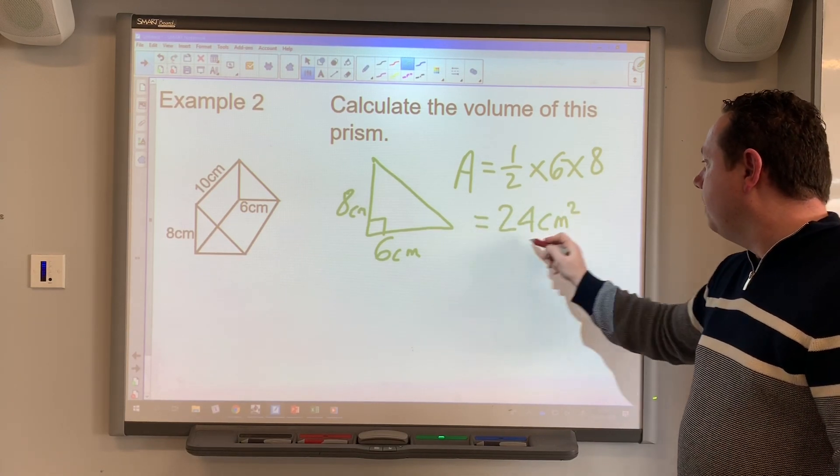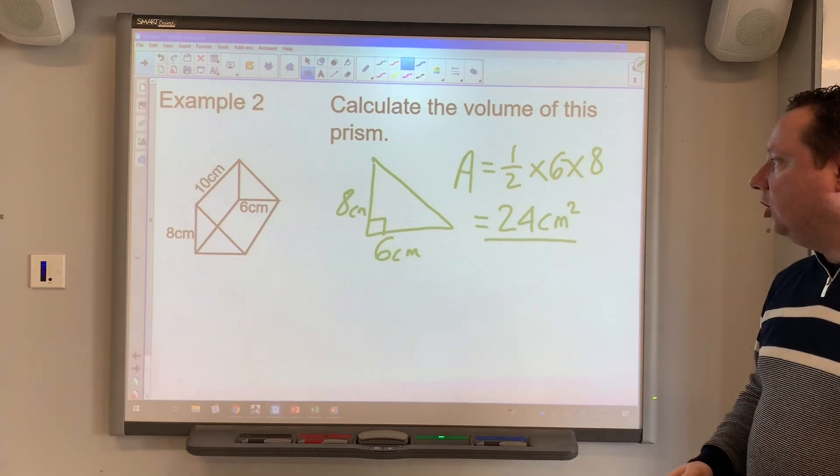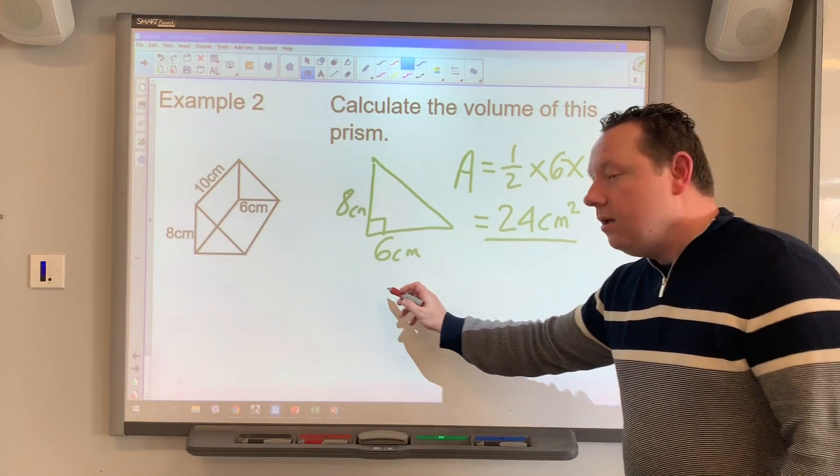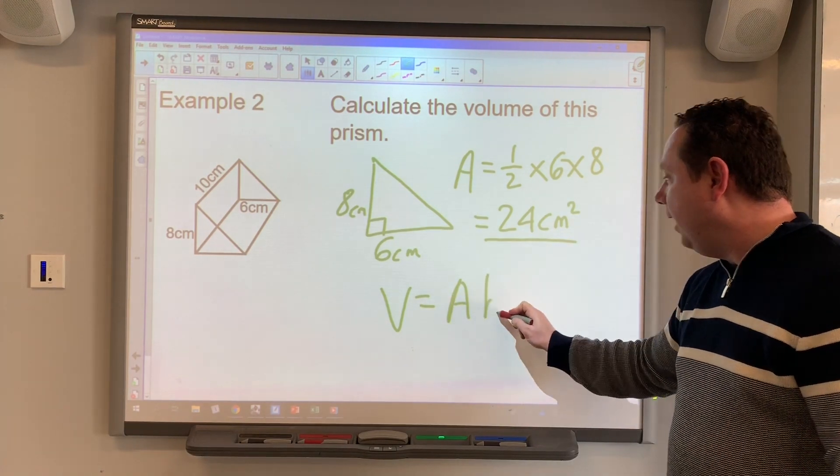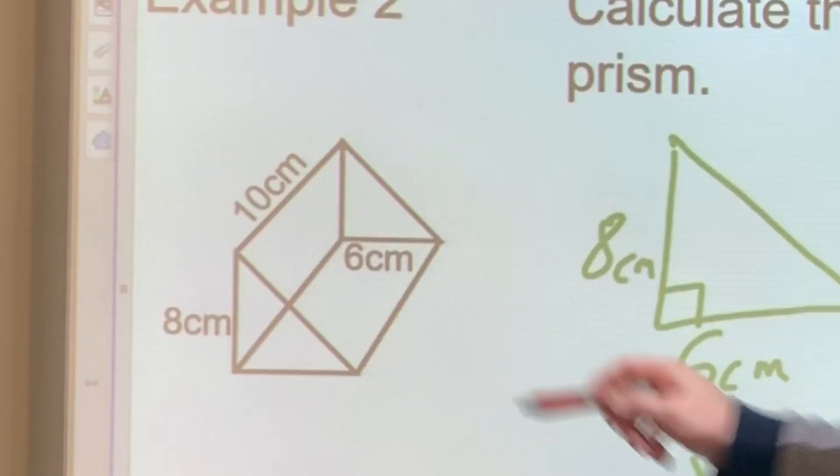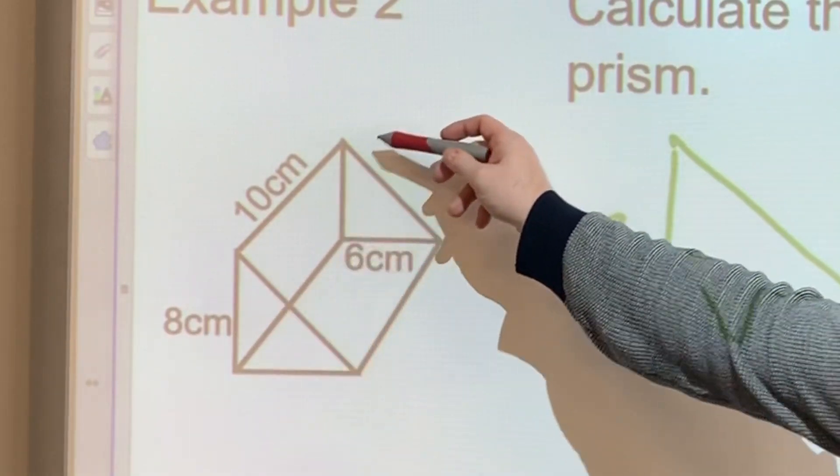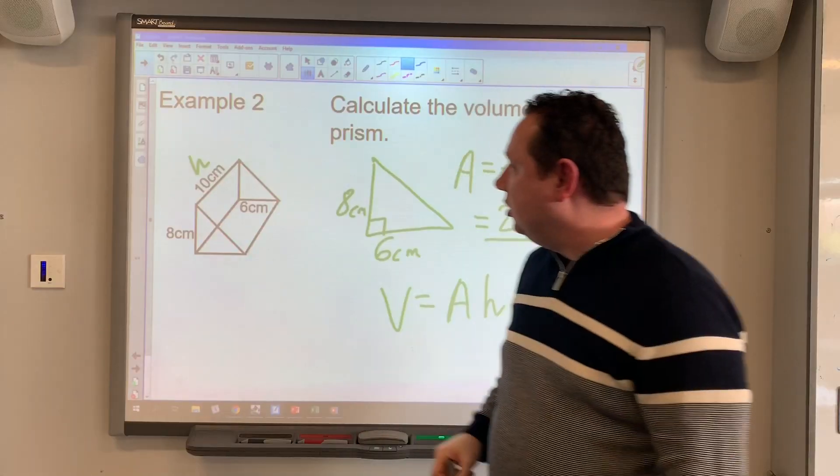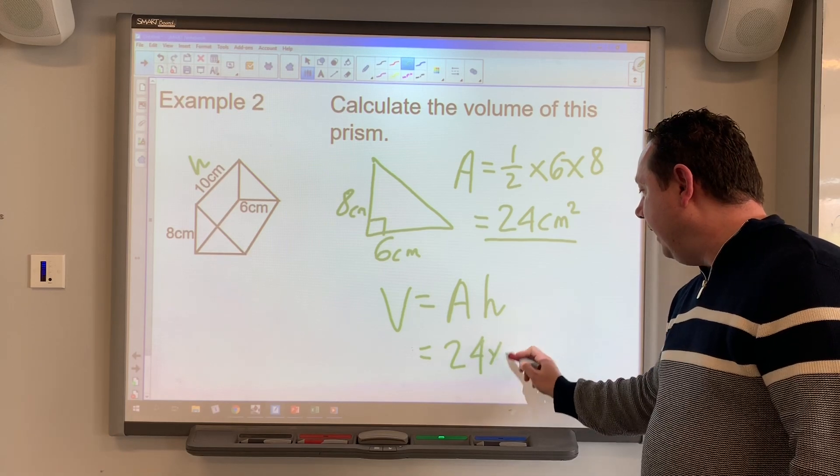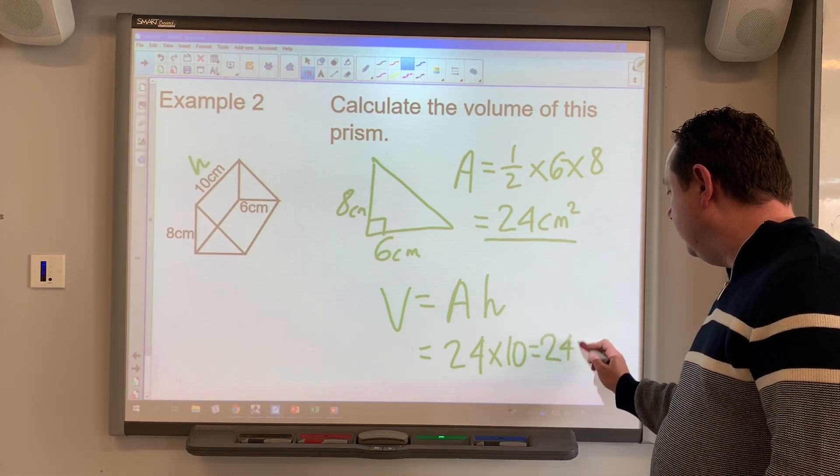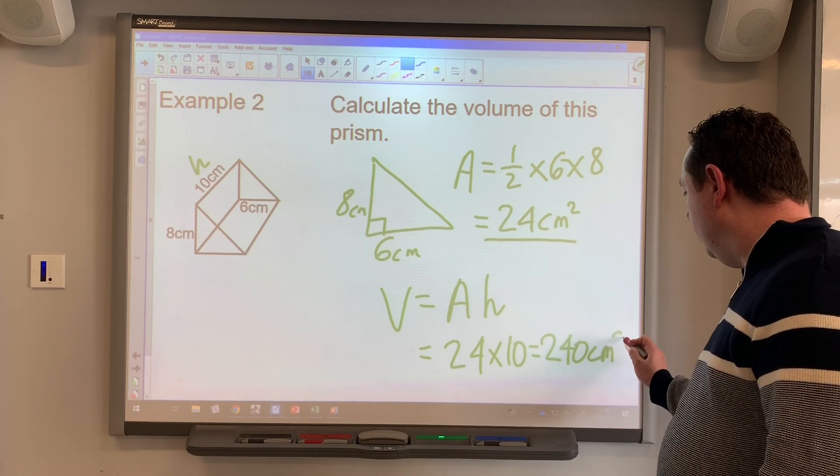And then just like the previous example the volume is always the area times the vertical height, so I need to identify this vertical height going all the way through the shape. H is 10, so it's 24 times 10 which is 240 centimeters cubed.